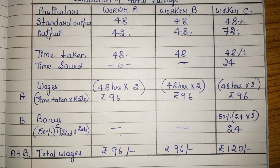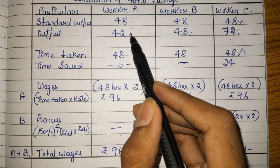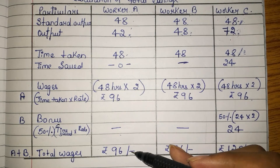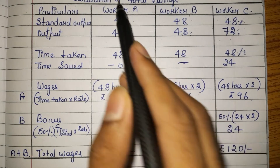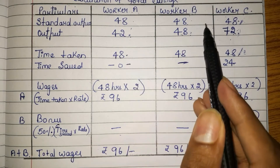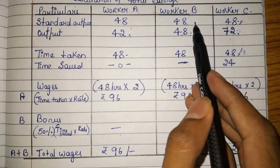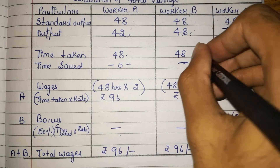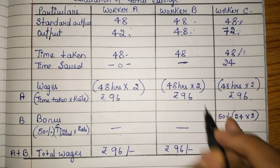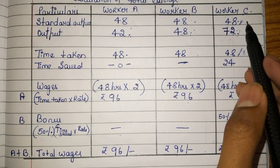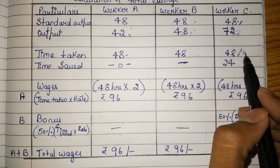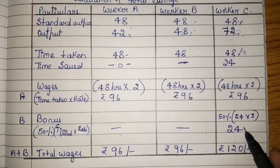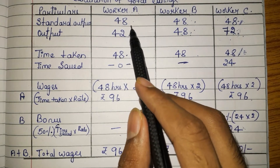If you observe, Worker A has produced 42 units which is less than the standard output, but he is paid for all 48 hours he has taken. Worker B has produced exactly 48 units in 48 hours, so his payment is also based on 48 hours. Worker C has taken 48 hours but produced more units, so he gets a bonus.